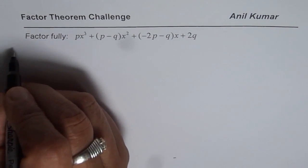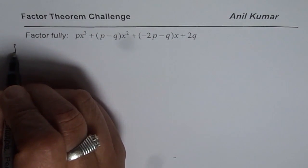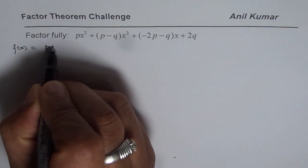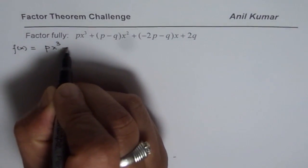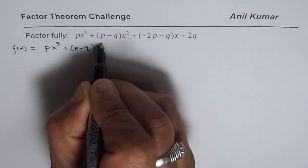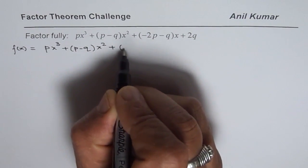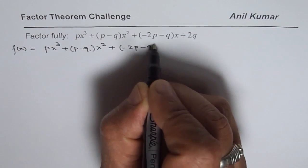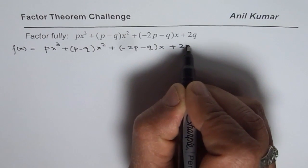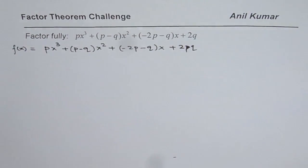So let us write down the polynomial first. Let us say that the polynomial function f(x) is given to us as px³ + (p-q)x² + (-2p-q)x + 2q. Now, in this function,